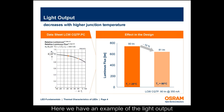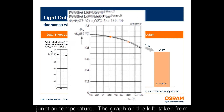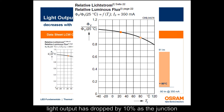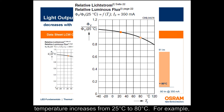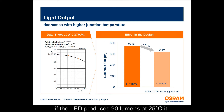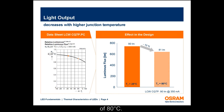Here we have an example of the light output characteristics of an Aslan SSL LED with rising junction temperature. The graph on the left, taken from the datasheet of the Aslan SSL LED, indicates the light output has dropped by 10% as the junction temperature increases from 25°C to 80°C. For example, if the LED produces 90 lumens at 25°C, it would produce 81 lumens at a junction temperature of 80°C.